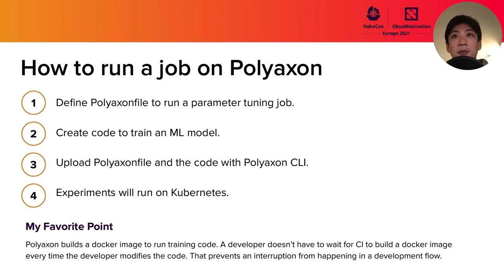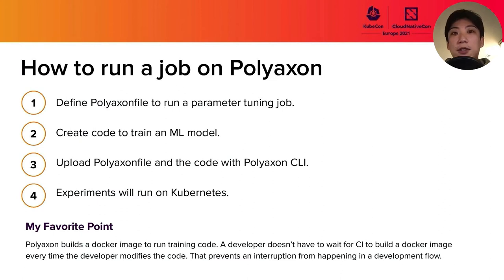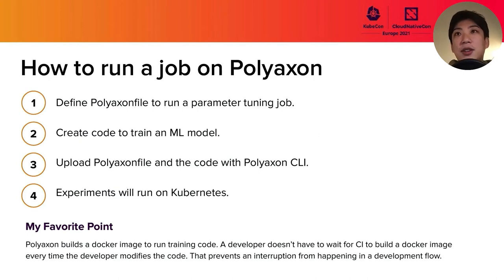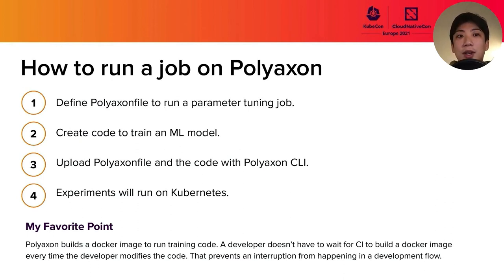My favorite point is that PolyAxon helps us build a Docker image. With this feature, a developer doesn't have to build a Docker image manually or wait for continuous integration every time they modify the code. It sounds like a subtle thing, but for me it's very important to keep concentration during development. This feature prevents interruptions from happening in the development flow.